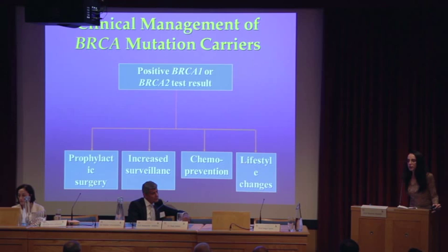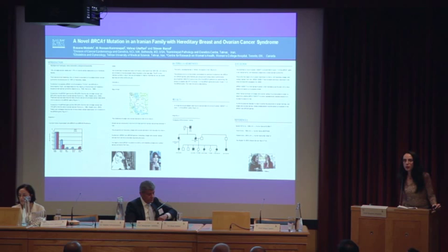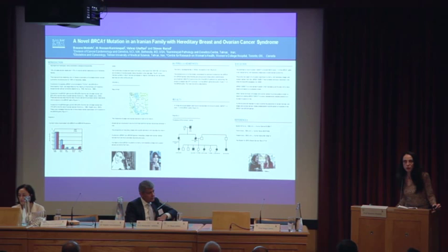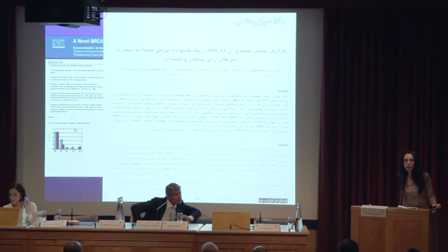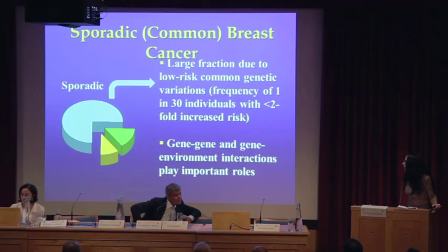We have published this finding in several forums because we do not know the frequency of this mutation — it had never been reported in any population. I reported it to the BRCA Information Corps, which is a database of BRCA mutations at the NIH, as an Iranian mutation that needs to be investigated. We don't know the frequency of this mutation in Iran or whether there are other mutations with high frequency there. We have also published our findings in genetic journals published in Iran, such as Genetics in the Third Millennium, in order to form collaborations.